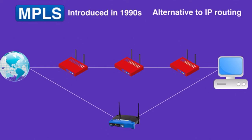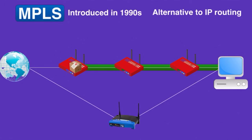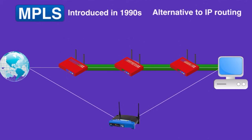In an MPLS network, MPLS assigns a 32-bit label to each IP packet. When an IP packet arrives, it gets labeled at the entry by the first router — this is also the router that predetermines the entire route the packet will take until it reaches its destination. After that, when the IP packet reaches the next router, it only checks the label. Every router checks only MPLS labels and performs packet forwarding; they never care about the destination IP address. Finally, the last router removes the label and forwards the original IP packet toward its final destination.